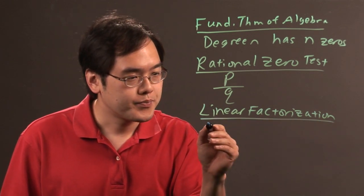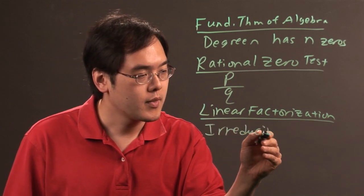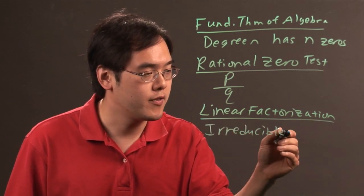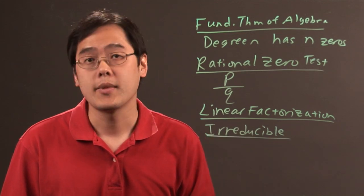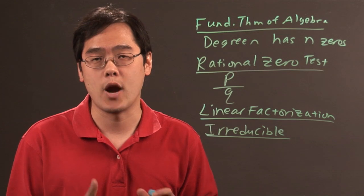The other thing to consider when it comes to finding all complex numbers is irreducibility. Irreducibility refers to when something is not reducible.